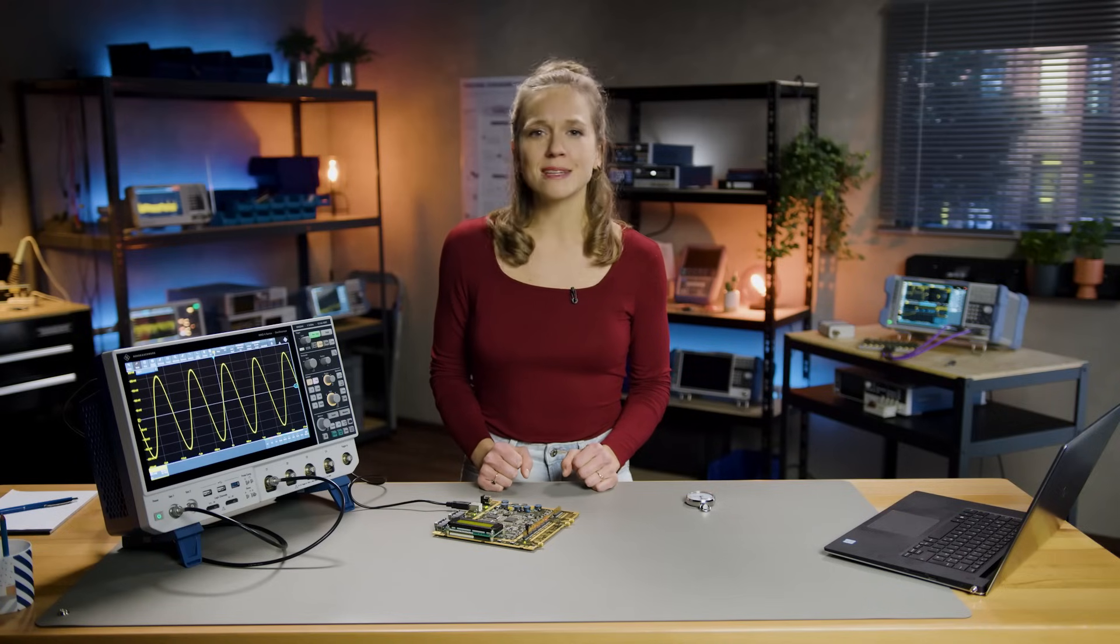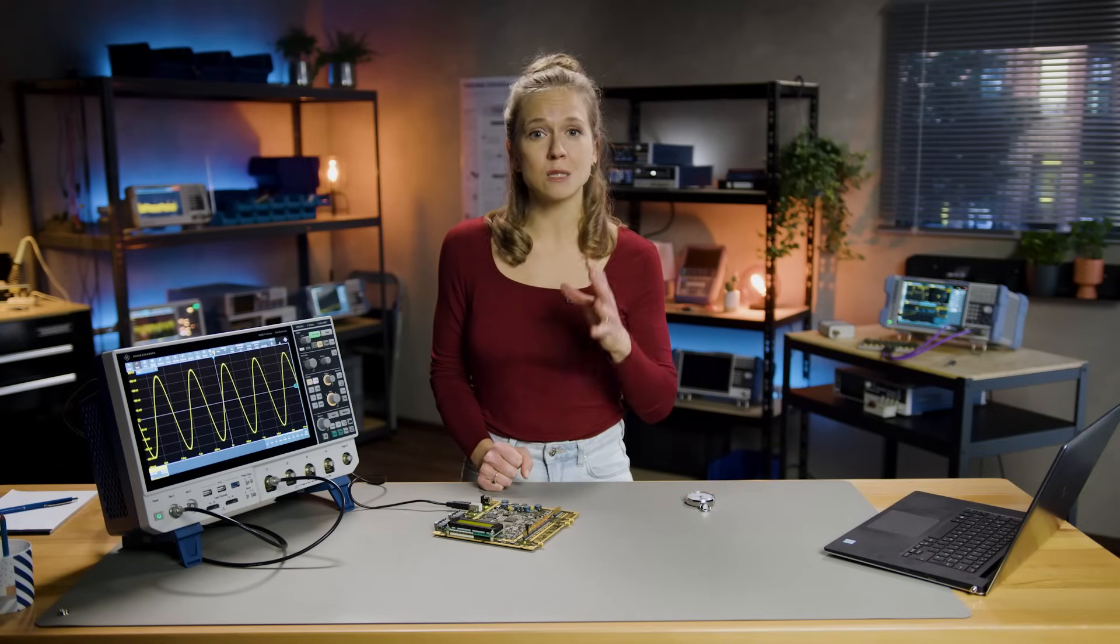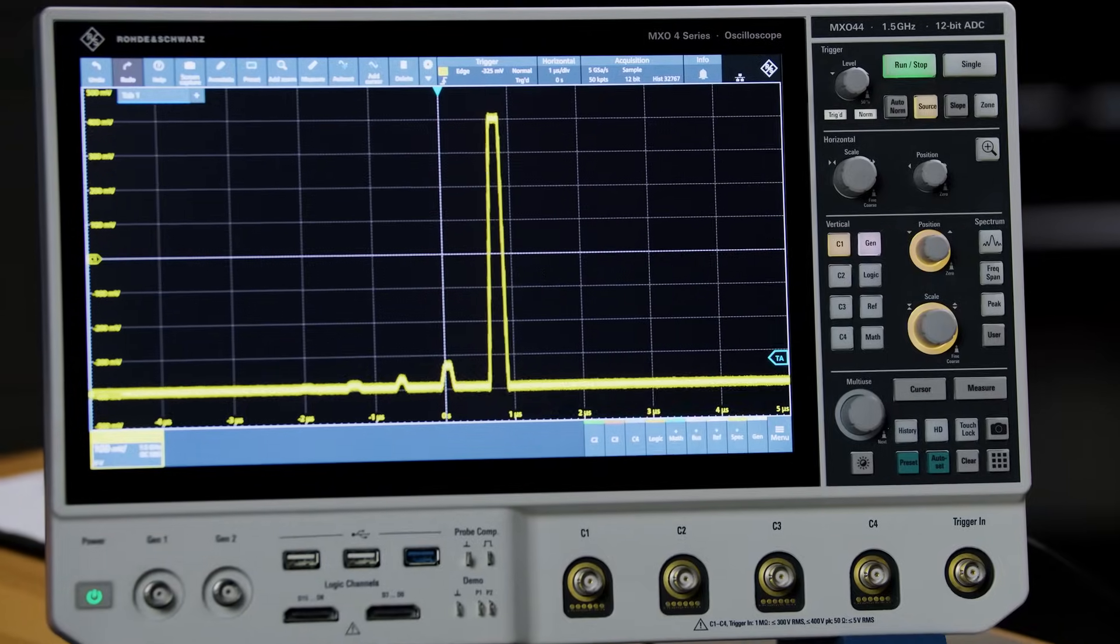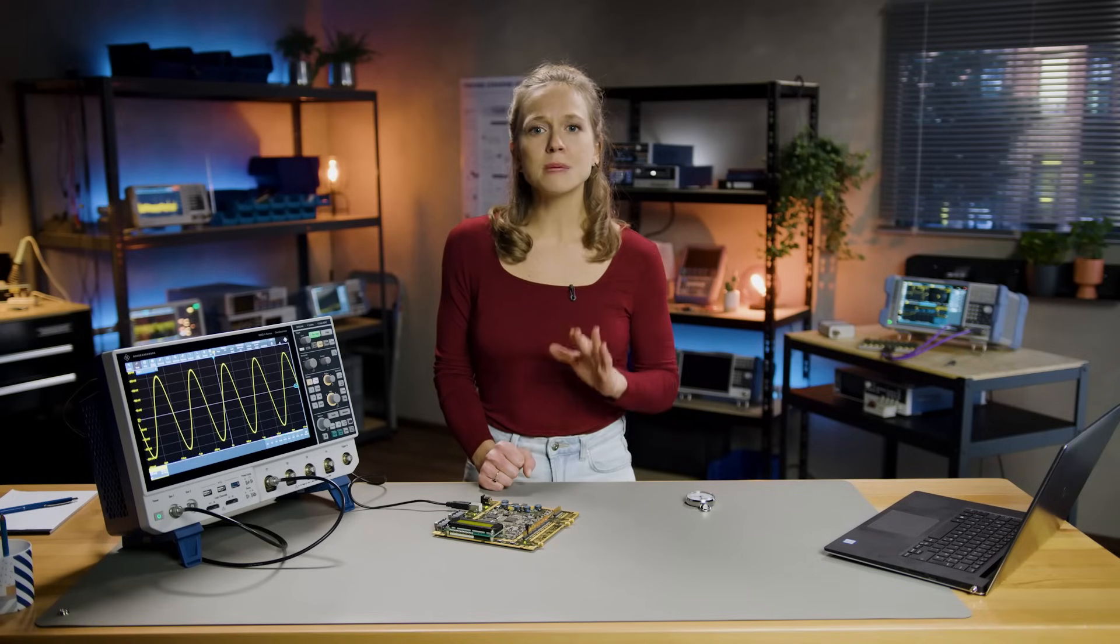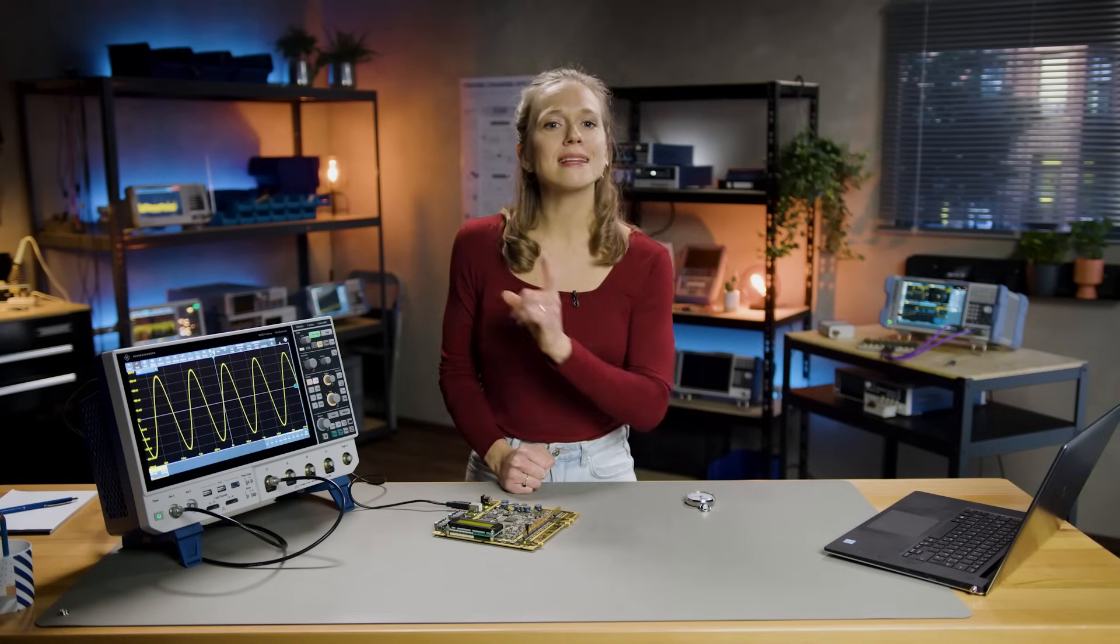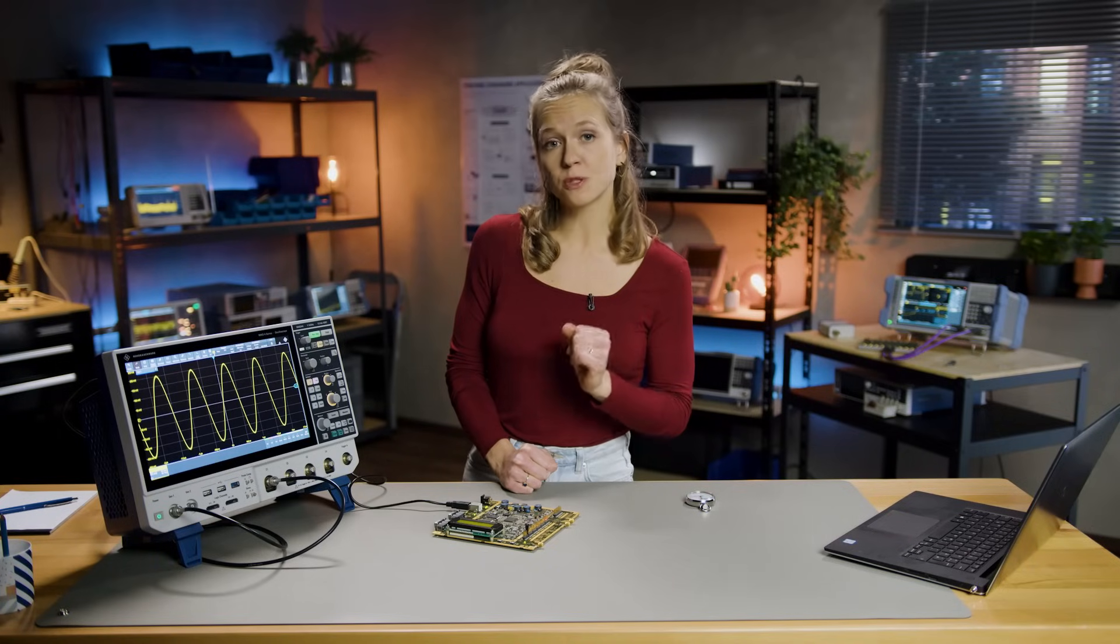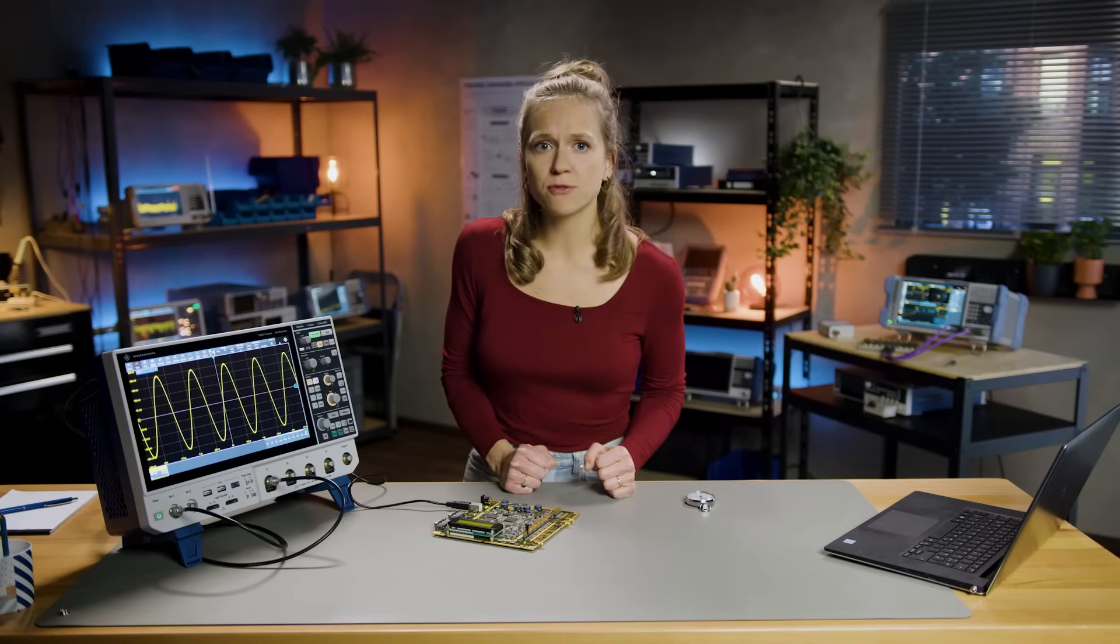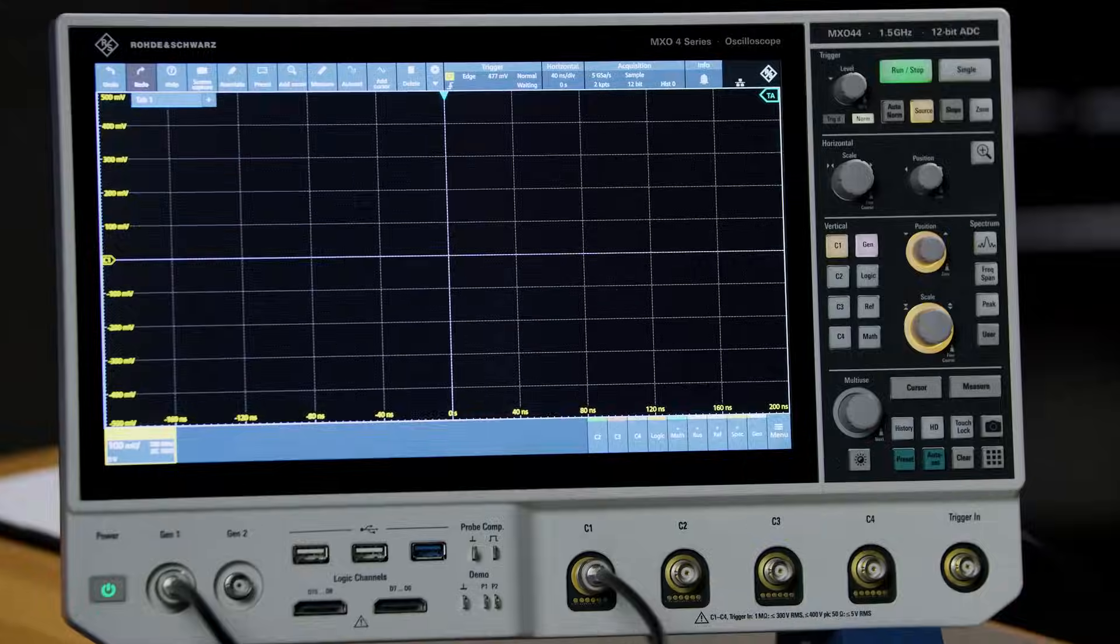In normal mode, the oscilloscope captures and updates the display only when a defined trigger condition occurs. This means that all the defined conditions to trigger must be met. So if no valid trigger value occurs, no waveform is captured and the last captured waveform continues to be displayed. And if no waveform were previously acquired, nothing will be displayed.